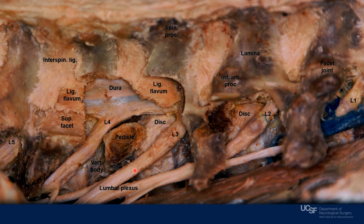In this segment, we remove the lamina, the articular processes, as well as the transverse process, in order to properly visualize the intervertebral space with the intervertebral disc, the posterior portion of the pedicle, as well as the courses of the nerve roots that run in an oblique fashion.